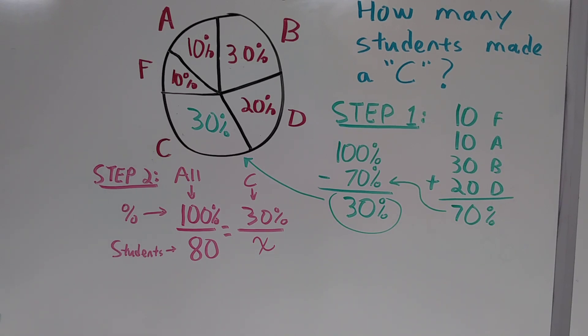100% represents the total student body, so that's 80 students. For just the C students, we know that they make up 30% of the class. As for how many actual students that is, we don't know, so we'll represent that with the variable x.